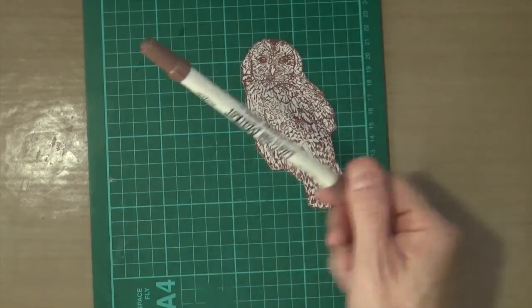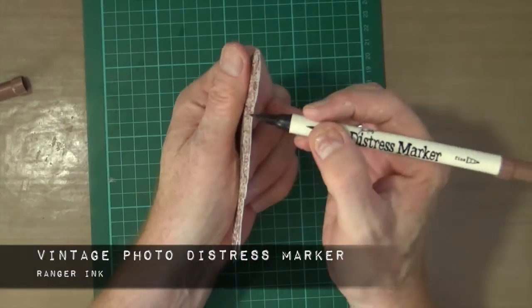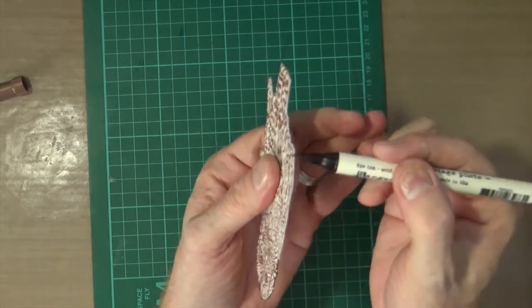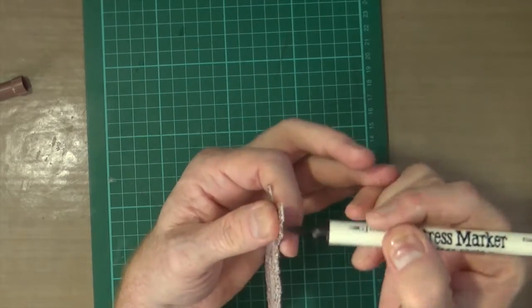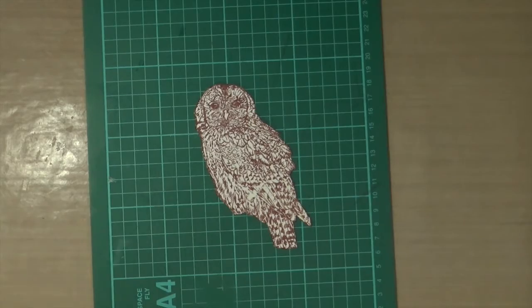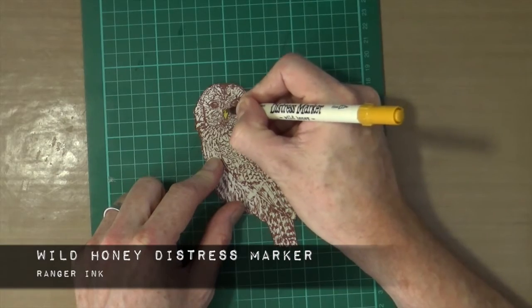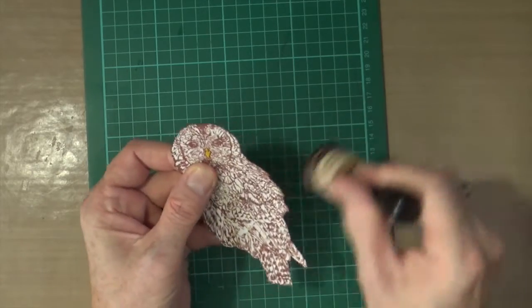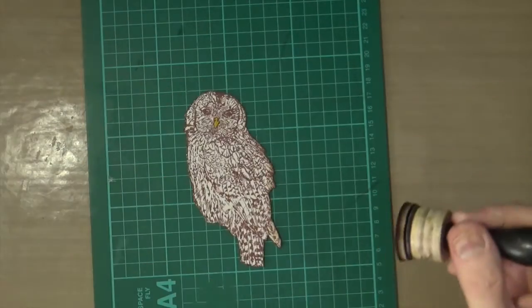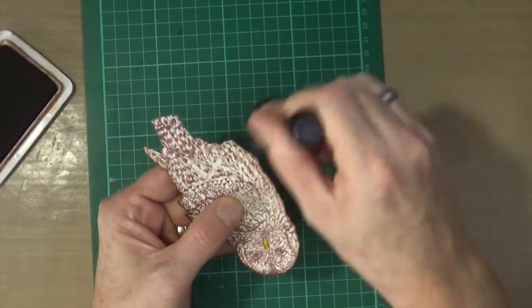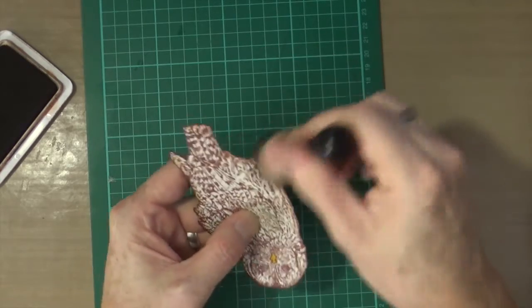I'm grabbing my Vintage Photo Distress Marker and using the brush tip end to go around the edge of my cutout, removing those raw white edges. To give the owl more detail, I'm using my Wild Honey Distress Marker to color in the owl's beak. Then using the sepia ink and blending foam, I'm going around the edges to add that same blended look as the other elements.